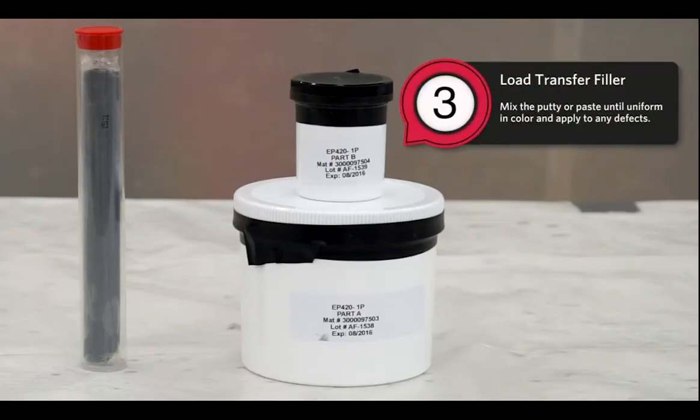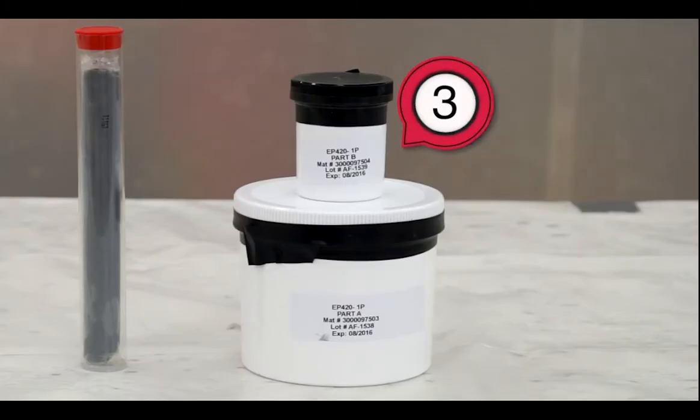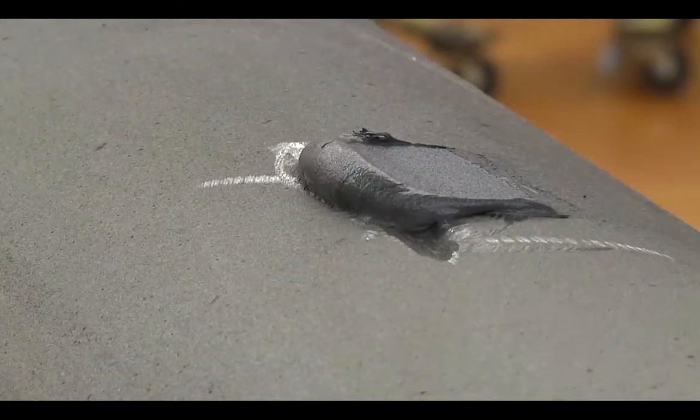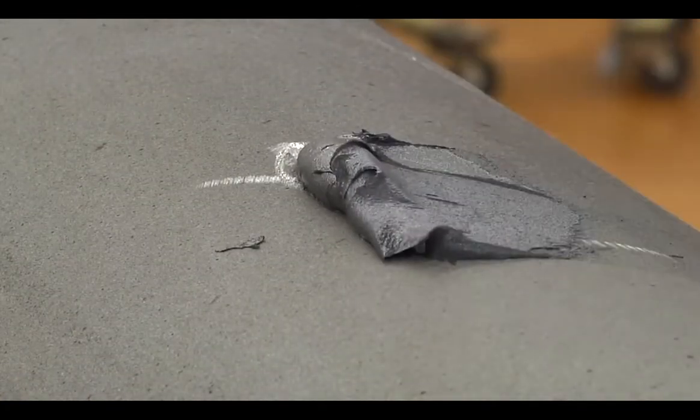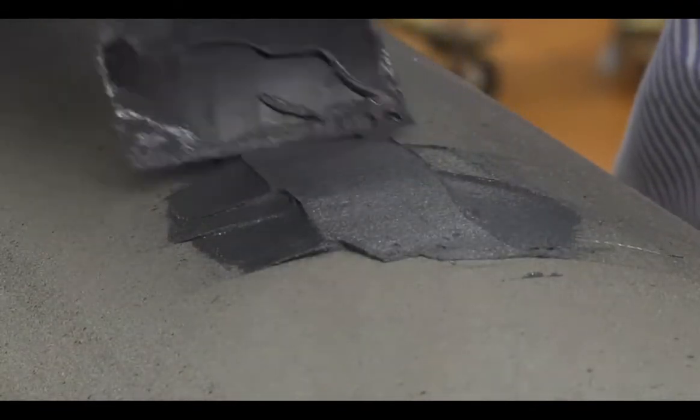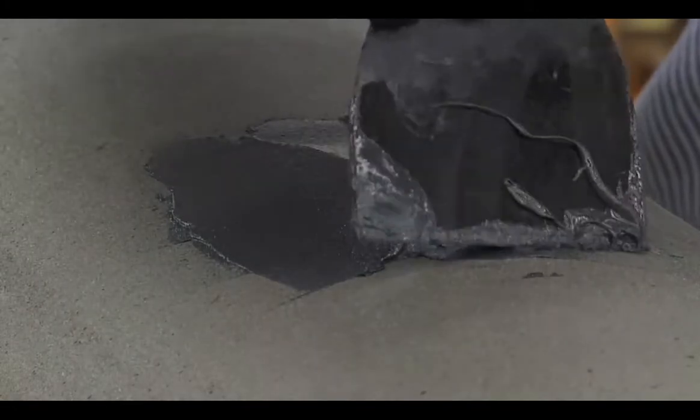Load Transfer Filler: Mix the putty or paste until uniform in color and apply to any defects or applicable areas such as seam welds or girth welds. Shape the filler to near net surface profile of pipe. Take care to ensure that no air pockets or voids are trapped underneath the filler.